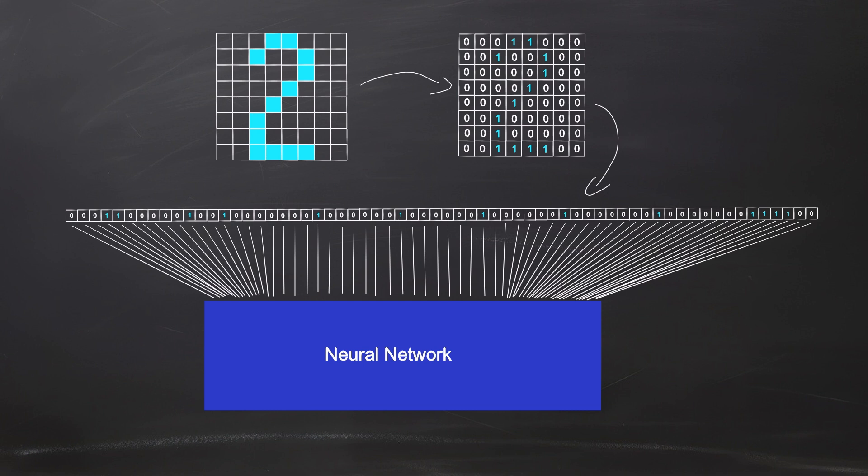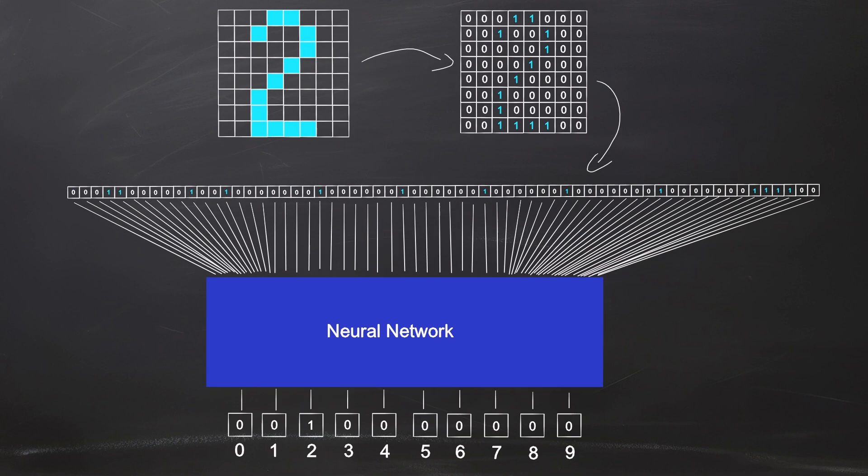Each element of this array becomes an individual input to our neural network. For simplicity, we'll limit this network to detect only digits. This means we'll need only 10 output neurons, one for each digit. In this case, if the third neuron output is 1, it indicates that the network has predicted that the digit in the image is 2, because we count from zero.